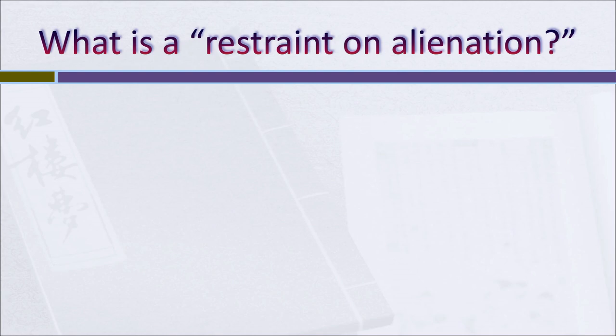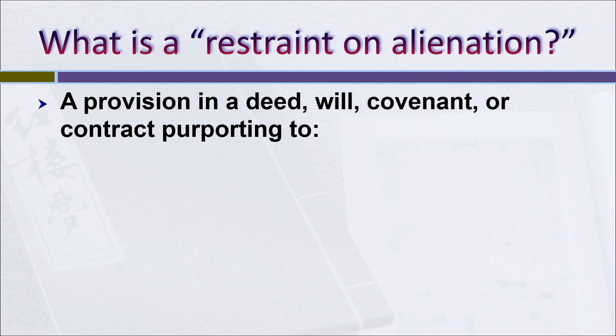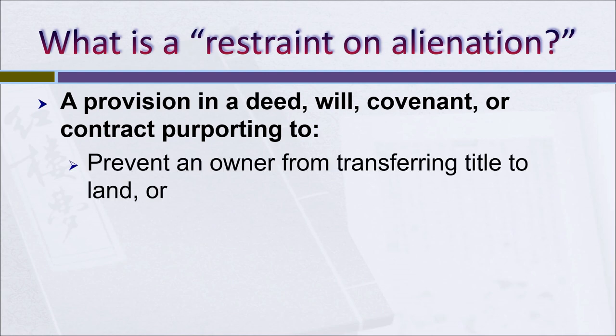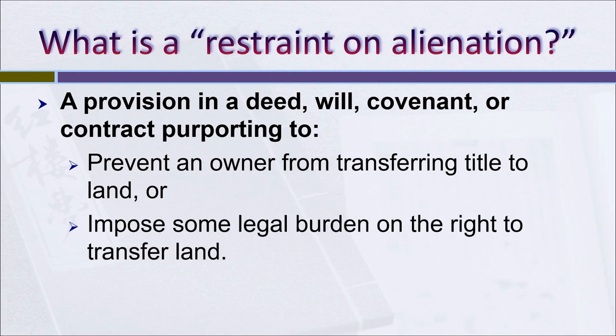What is a restraint on alienation? It's a clause — it could be in a deed, a will, a covenant running with the land, or a simple contract — that purports to either prevent an owner from transferring title to his or her land, or to impose some legal burden on the right to transfer the land. That burden might be a duty to get the consent of a former owner, or an obligation to transfer the land to some third party instead.